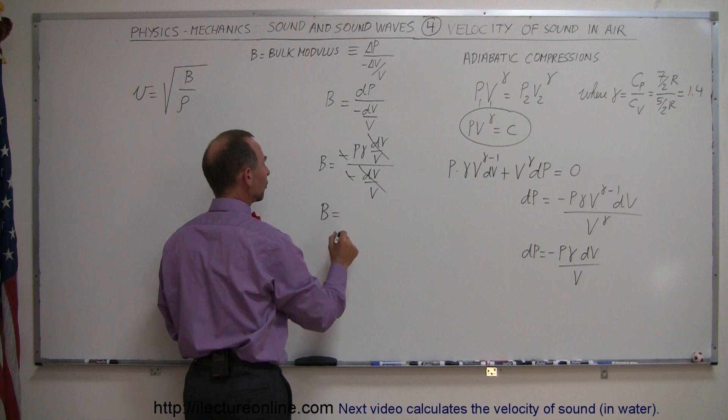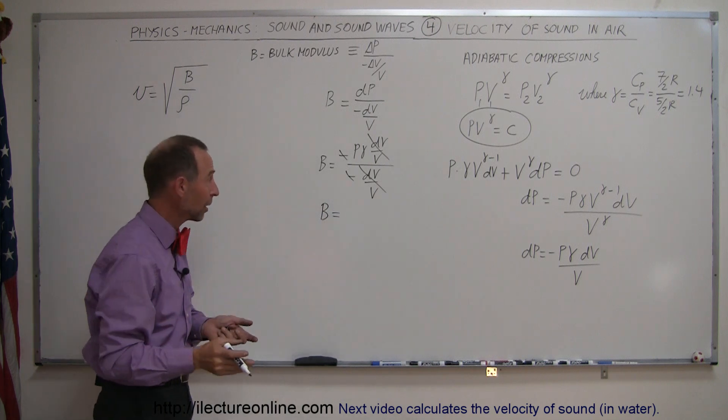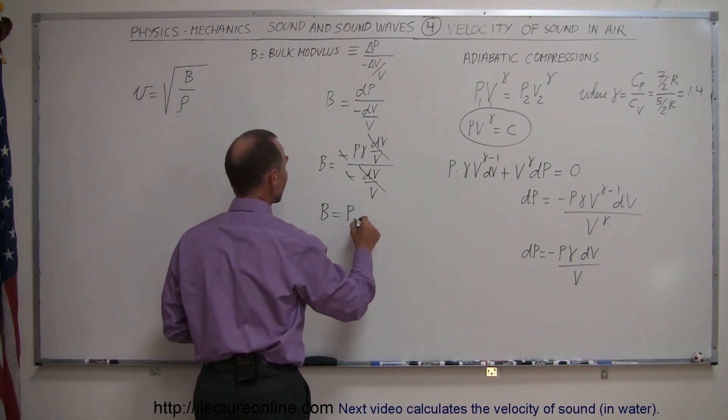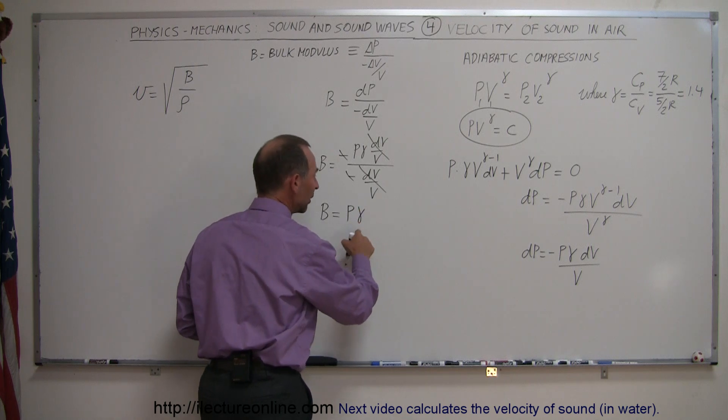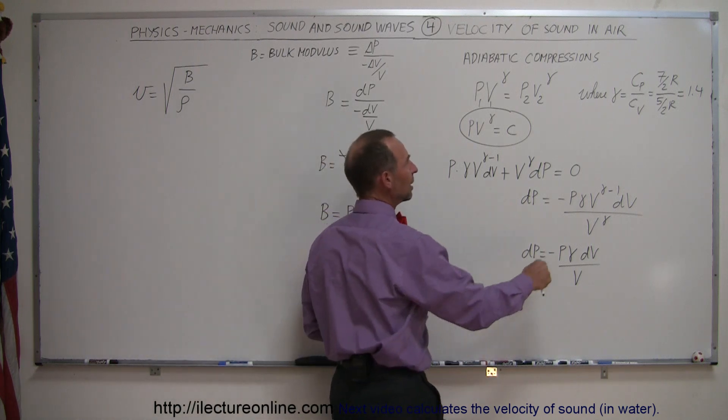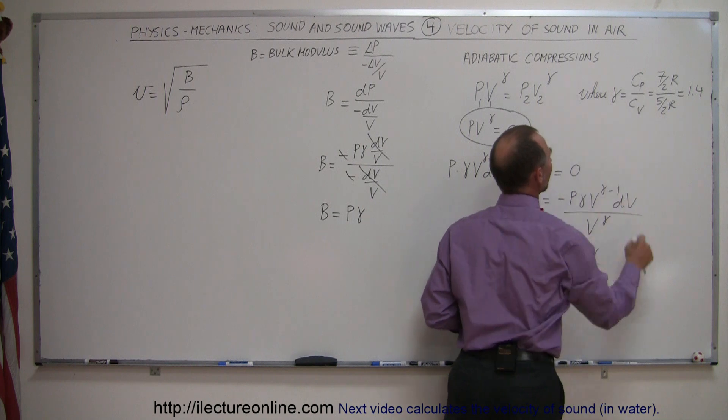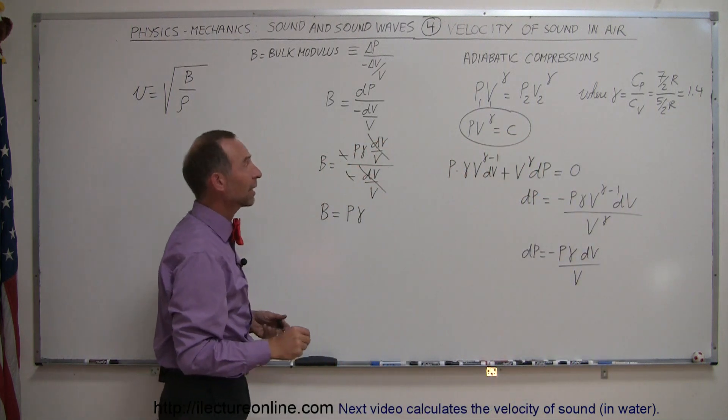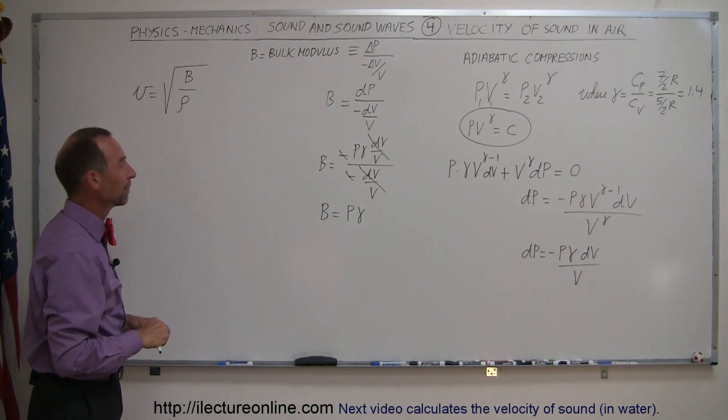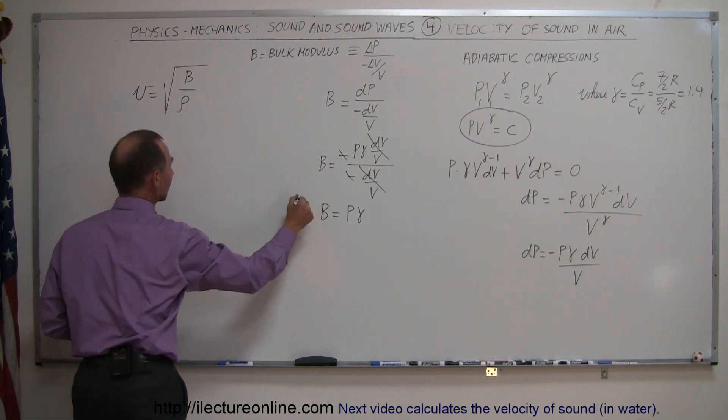and so the bulk modulus for air, which is a diatomic molecule, is simply equal to the pressure of the air times the gamma, which is the ratio of the heat coefficient at constant pressure divided by the heat coefficient at constant volume. If we now replace that into the equation over here,